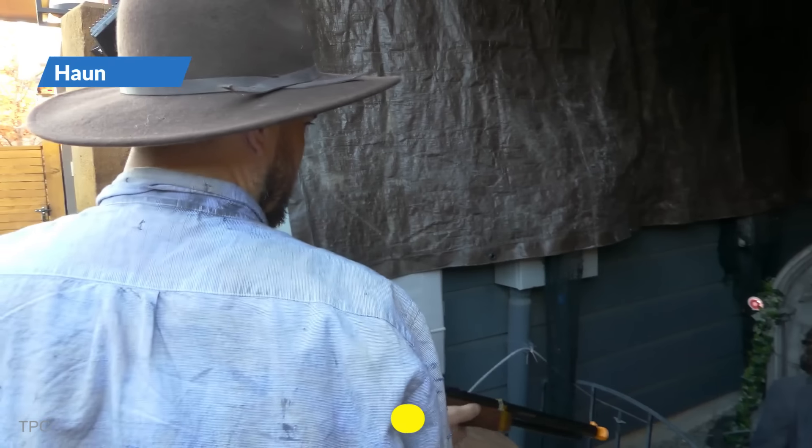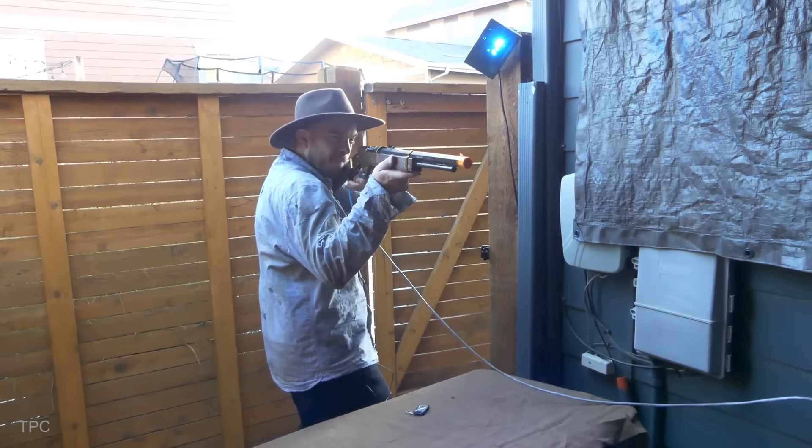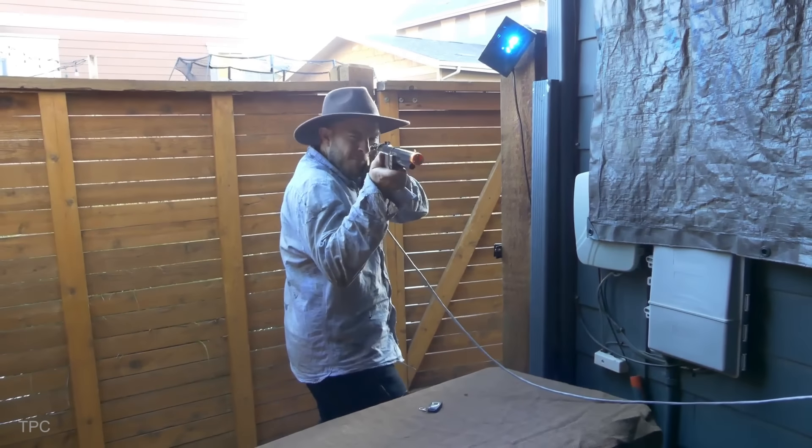Number 1. Last on the list is a haunted shooting gallery created by Jason. The objective is simple: aim at the animated props using a rifle and take your shot. Each prop features a tiny, laser-activated target.